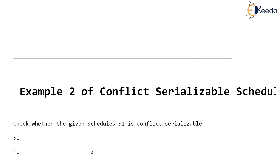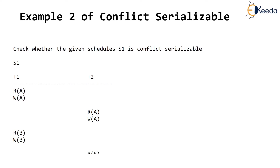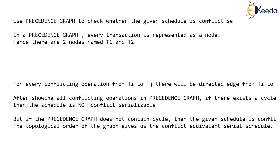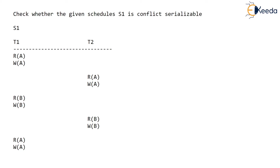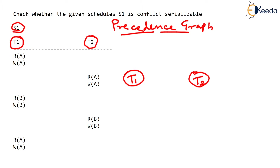Let's get back to our example. We want to know whether S1 is conflict serializable. What we do is use the concept of a precedence graph. The precedence graph is a directed graph where if there are two transactions T1 and T2, each one of them is shown as a node of the graph. Had there been three transactions, there would have been three nodes.